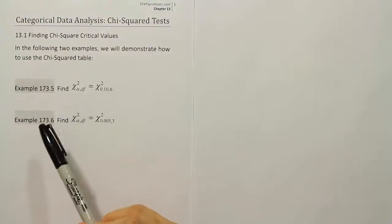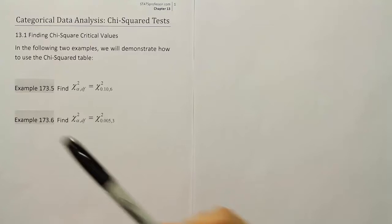The examples are 173.5 and 173.6. In these problems, we're finding chi-squared critical values.